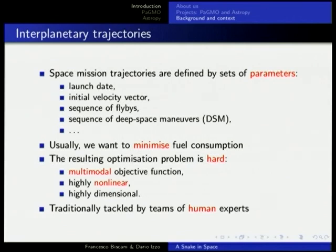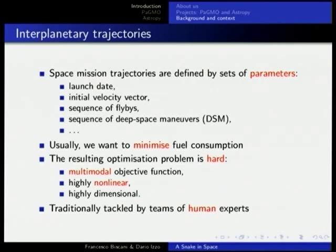A trajectory in a space mission is defined by a set of parameters: the launch date, your initial velocity vector — which means what rocket you're departing with — the initial direction you're leaving Earth, and the sequence of flybys. If you want to go anywhere non-trivial in the solar system, like Mars or the Moon, you often need to do flyby maneuvers — flying in proximity of another planet and stealing a bit of its gravitational energy to transmit to the spacecraft, gaining or reducing speed depending on your objective.